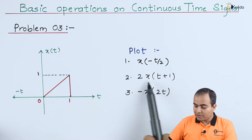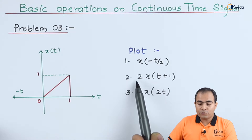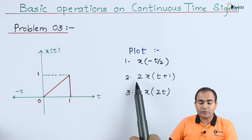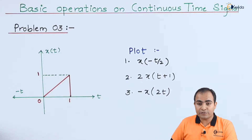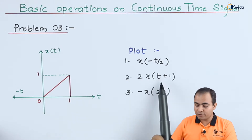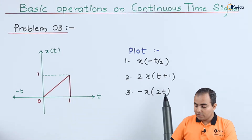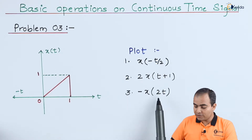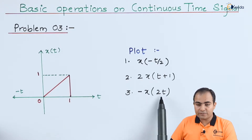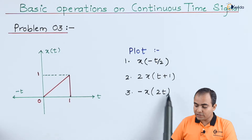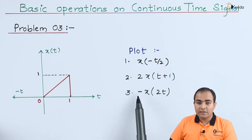Second one: 2 times x of t plus 1. The amplitude is multiplied by 2 which means we are going to use amplitude scaling property, and the t is shifted, so time shifting property will be used because it is shifted by 1. In the third case, minus of x of 2t is mentioned. Inside the bracket, 2t means we will use time scaling property, and the whole function x is multiplied by minus 1, so we are going to use amplitude scaling property.